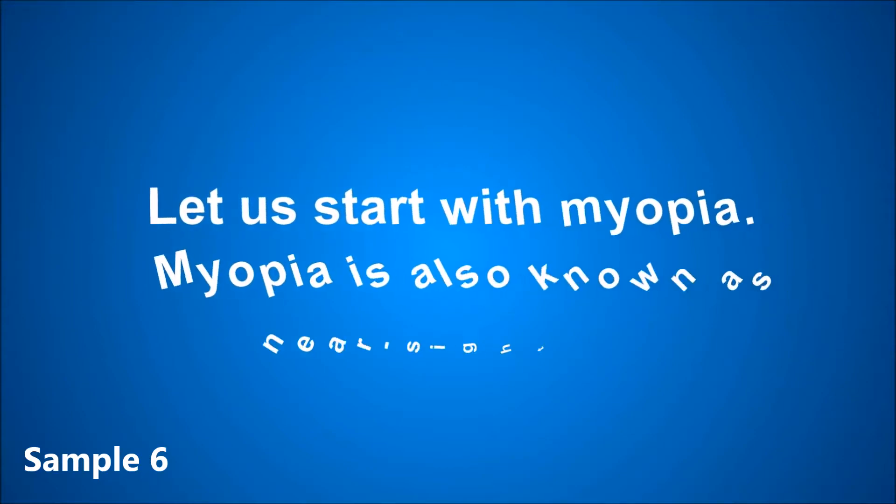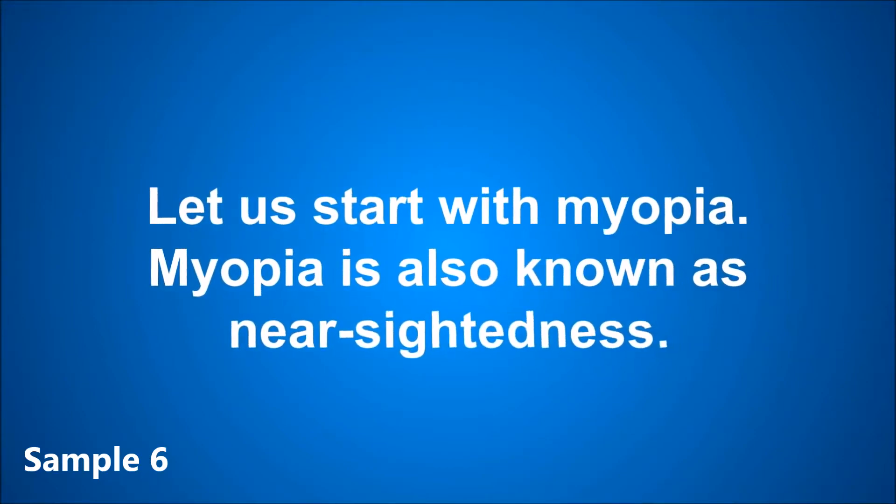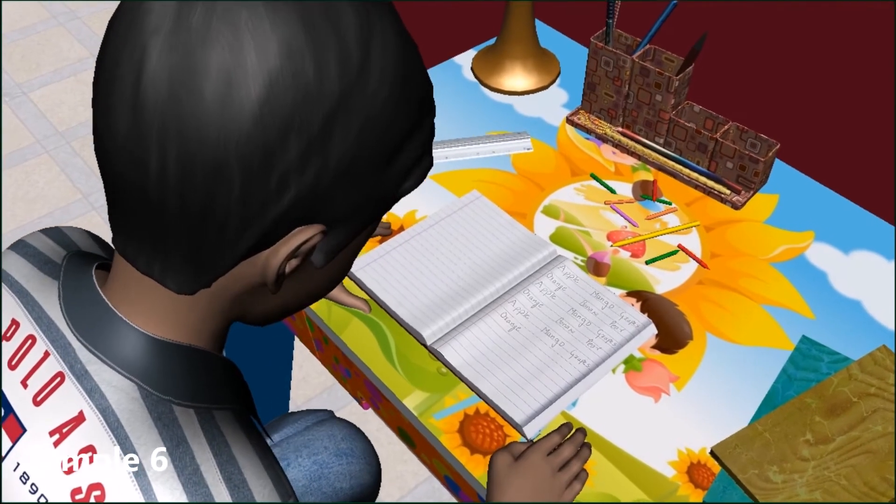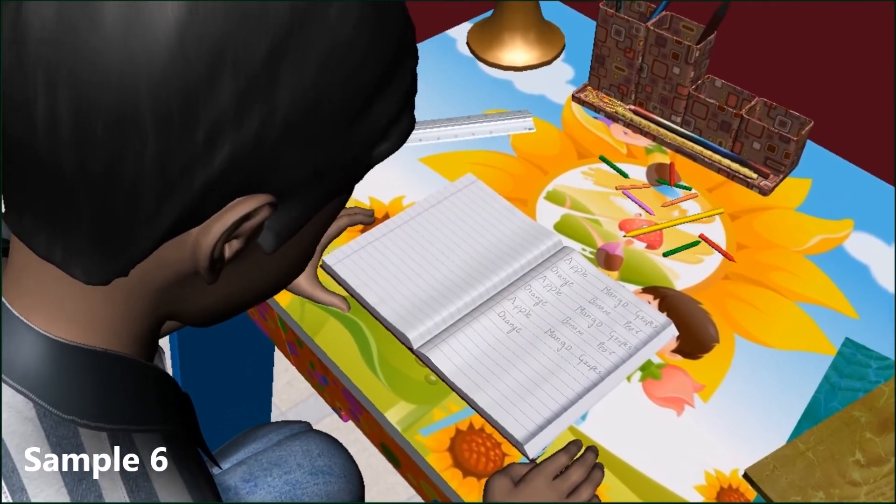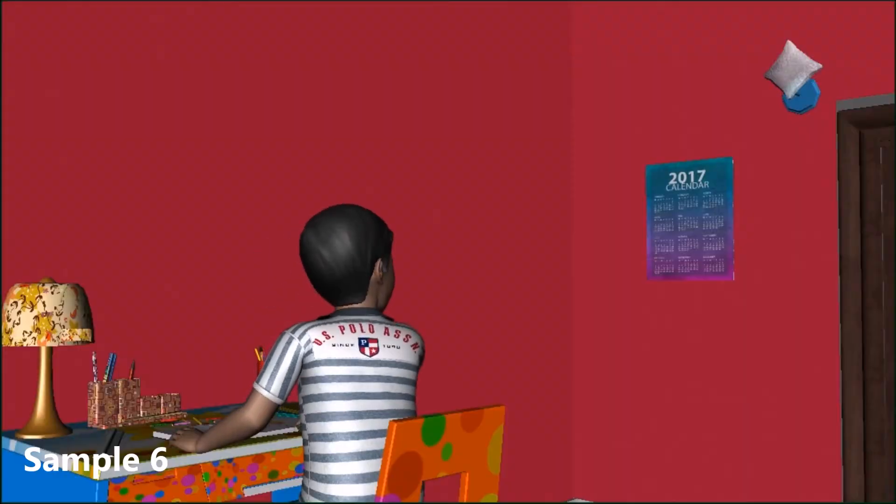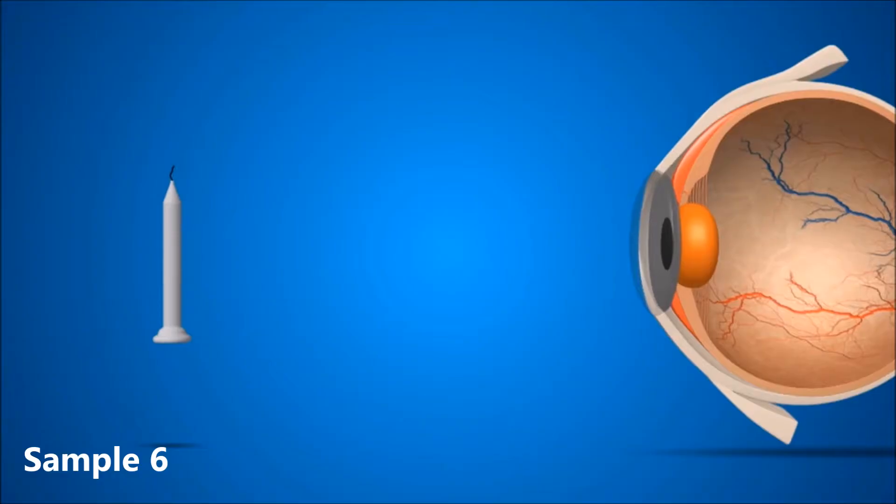Let us start with myopia. Myopia is also known as nearsightedness. A person with myopia can see nearby objects clearly but cannot see distant objects distinctly. A person with this defect has the far point nearer than infinity.